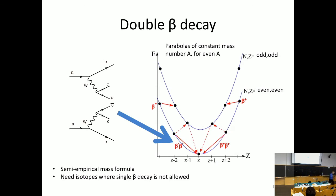We are looking for isotopes where regular beta decay going up in Z is not allowed, but double beta decay is allowed. That happens when, for example, a nucleus at Z-2 cannot decay to Z via single beta decay because the intermediate energy is higher, but it can skip directly — this is allowed. These are the even-even nuclei on the lower curve of the mass parabola.